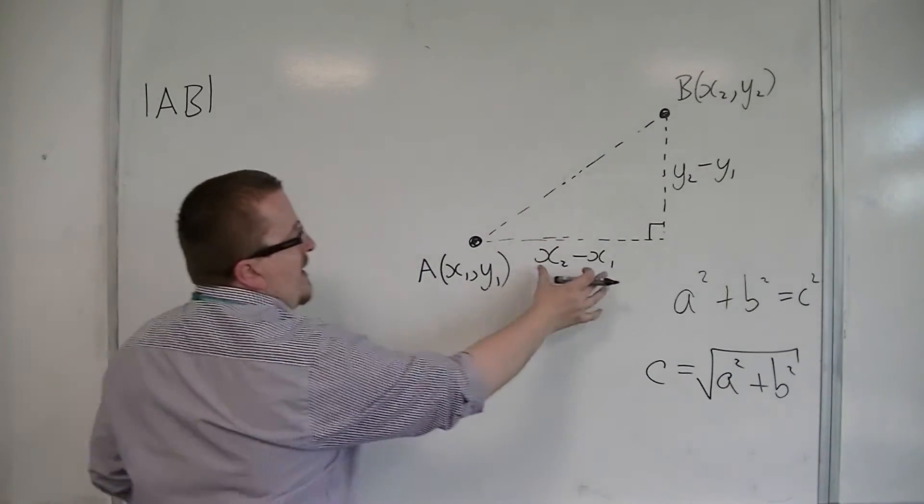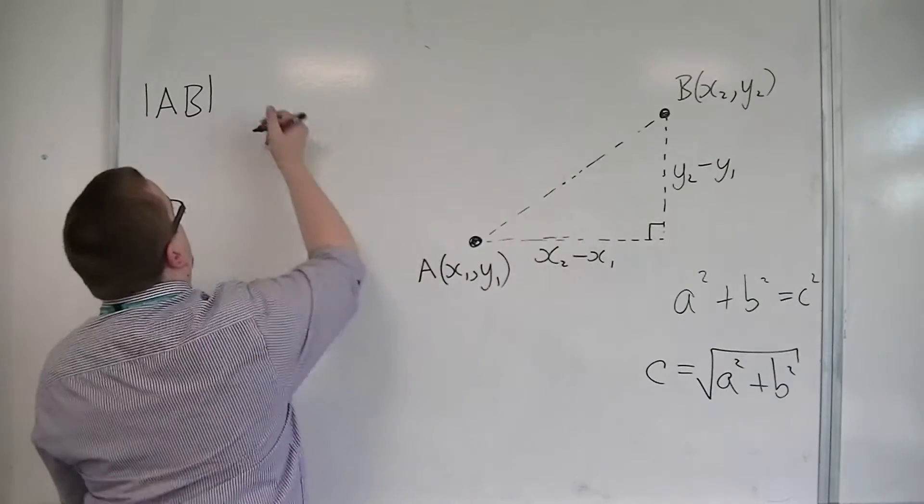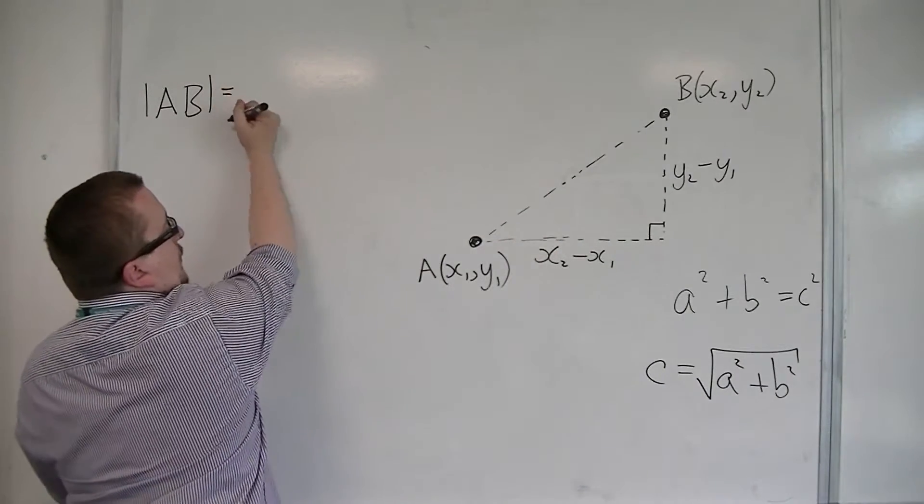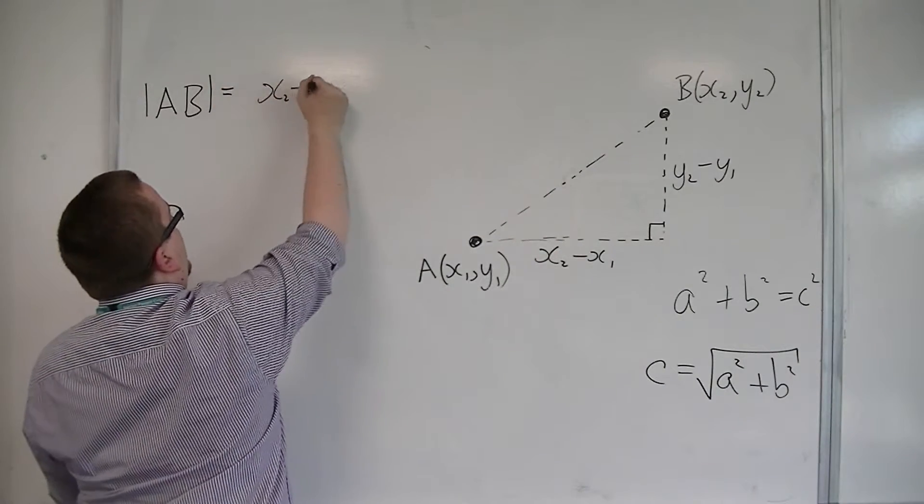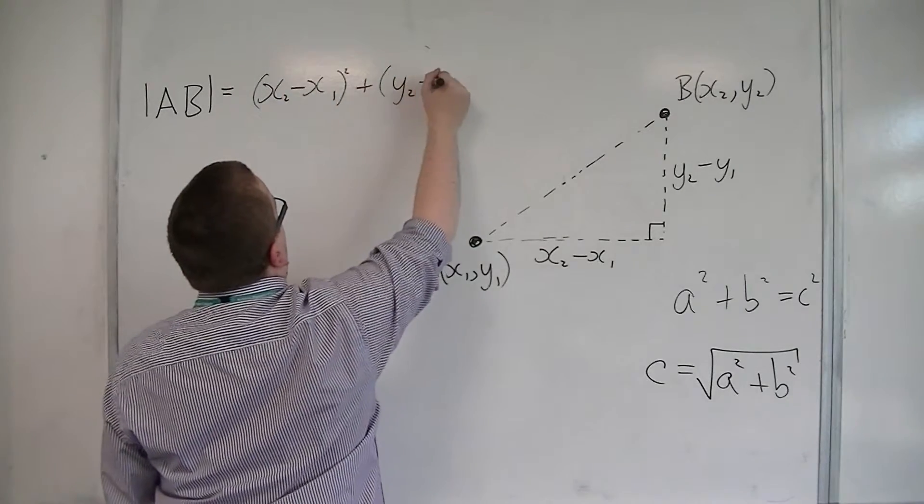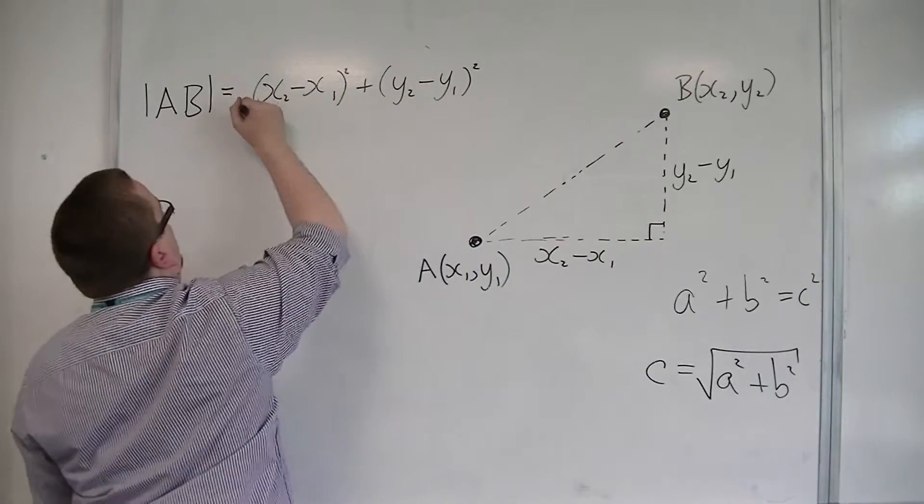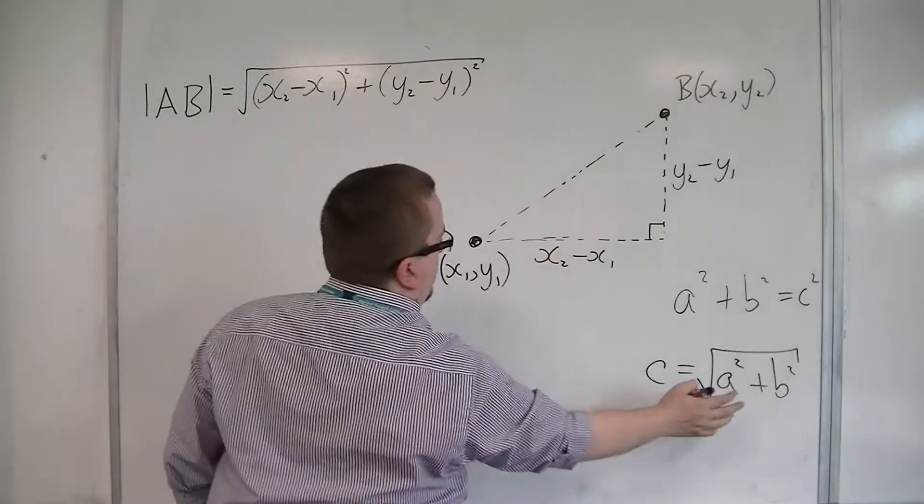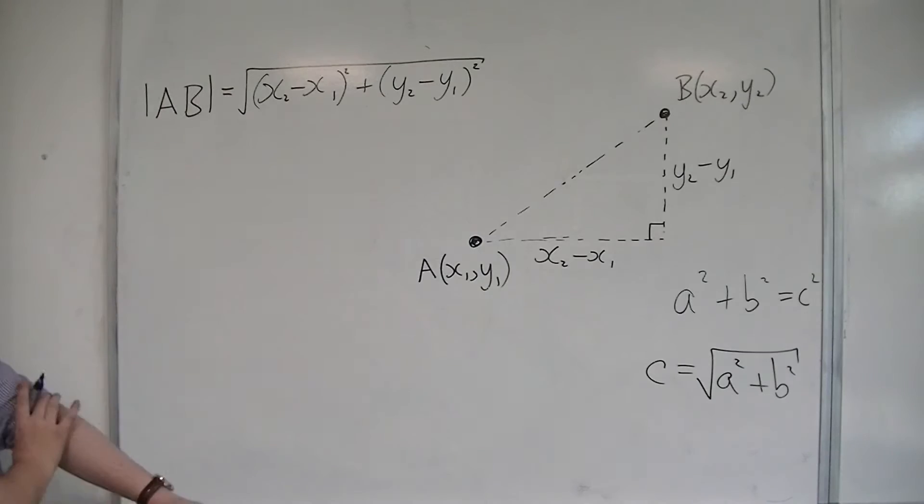So, if that's A and that's B, then the length is equal to A, which is x2 minus x1, squared, plus B squared, y2 minus y1 squared, square rooted. As the formula suggests.